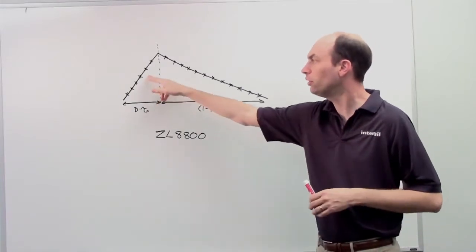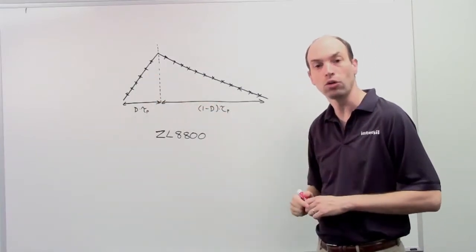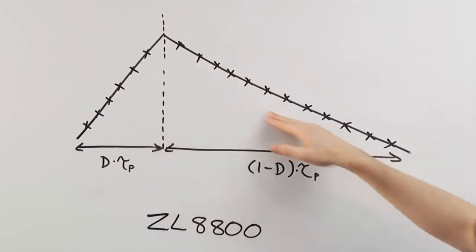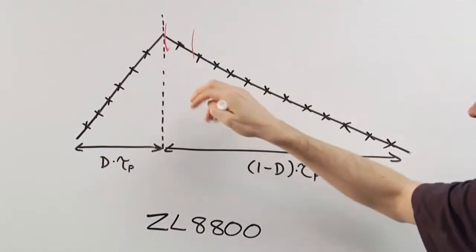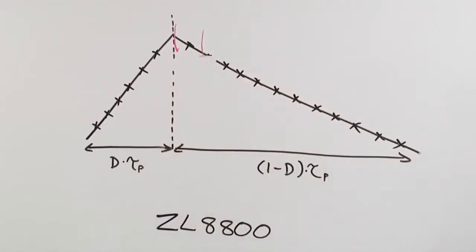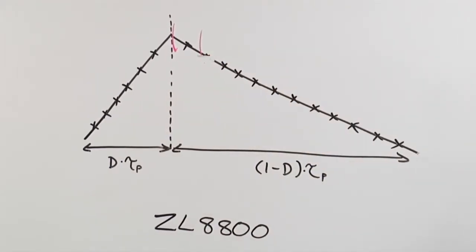The way the device works is it continuously samples the inductor current at all points. If you're using down-slope, it will only look in this period of time after a certain blanking period. And you get to select this time period to avoid any switch node transitions, which causes noise to come onto the signal.